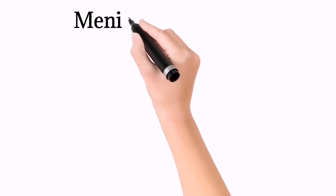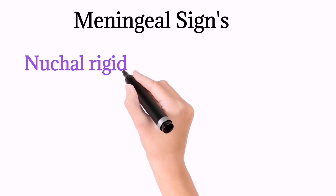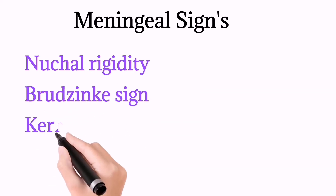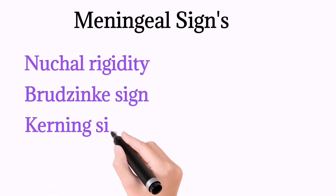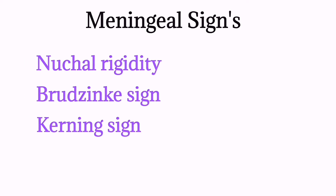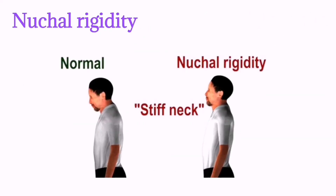Today I will teach you meningeal signs — that is nuchal rigidity, Brudzinski sign, and Kernig sign — with some great mnemonics, and demonstrate how to perform these signs. Nuchal rigidity also refers to neck stiffness.